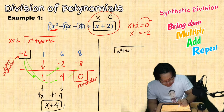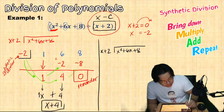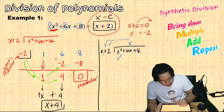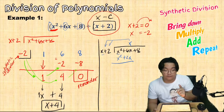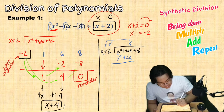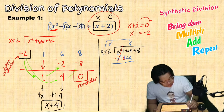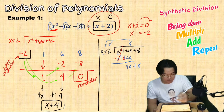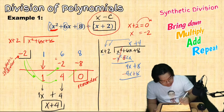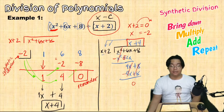To compare, in long division we divide x squared plus 6x plus 8 by x plus 2. Dividing x squared by x gives x; multiplying gives x squared plus 2x; subtracting gives 4x; bringing down 8 and dividing 4x by x gives 4; multiplying gives 4x plus 8; remainder is 0. The quotient is x plus 4 — same result, but synthetic division is faster.